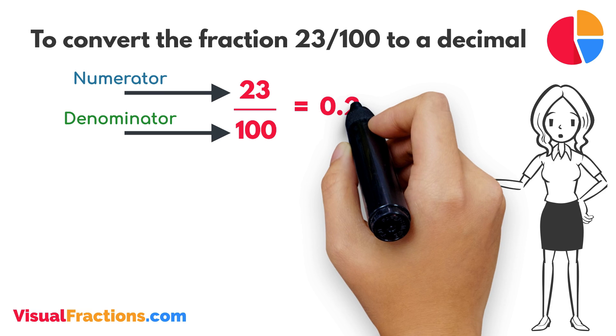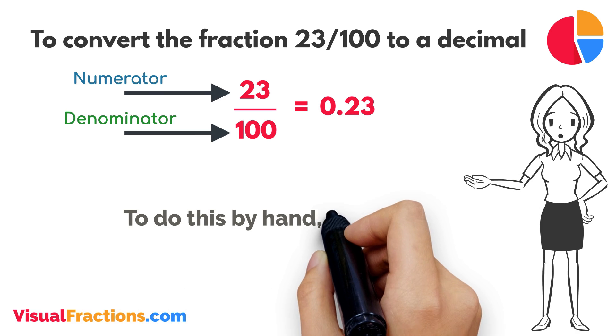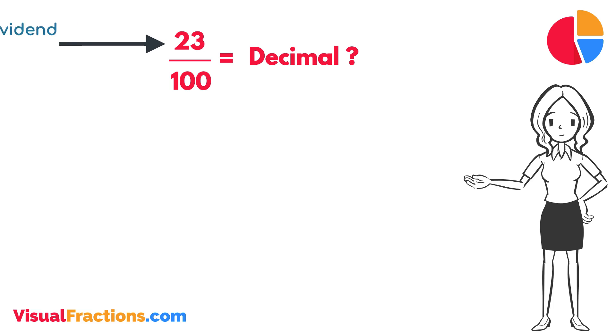The answer we get is 0.23. To do this by hand using long division, we start by writing 23 as the dividend and 100 as the divisor.